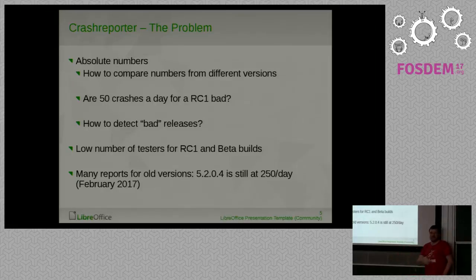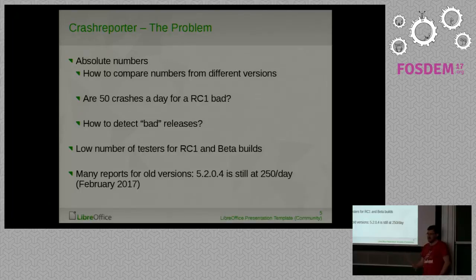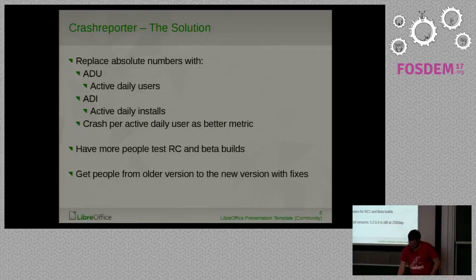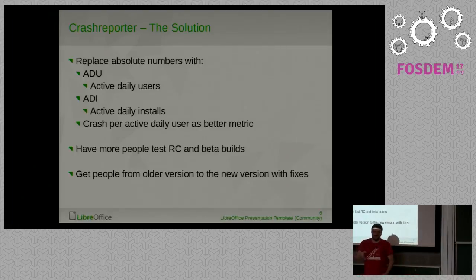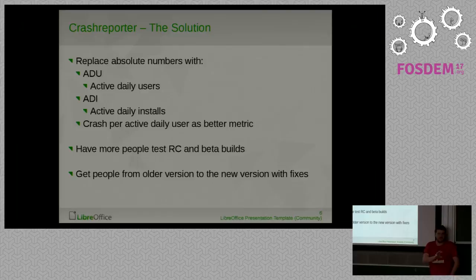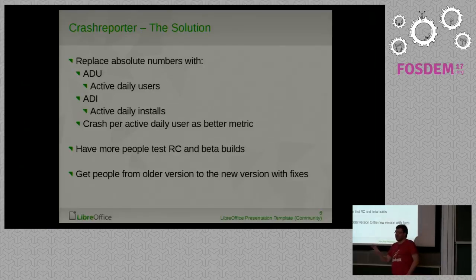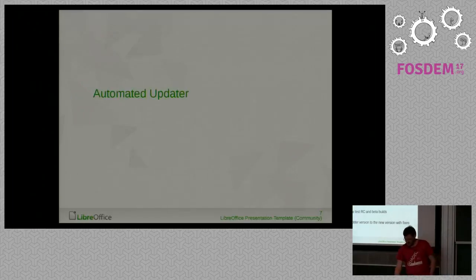These numbers show that users are not updating regularly. We release about once a month a new final build, but quite a number of users stay with old builds. The solution is to divide the number of daily crashes by the number of active daily users or active daily installs — that's what Mozilla does and what we should do. Our problem is we don't have any idea how many daily users we have. We know how many people downloaded LibreOffice, but not how many are actually using it.